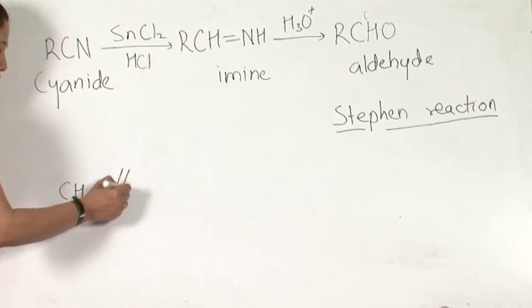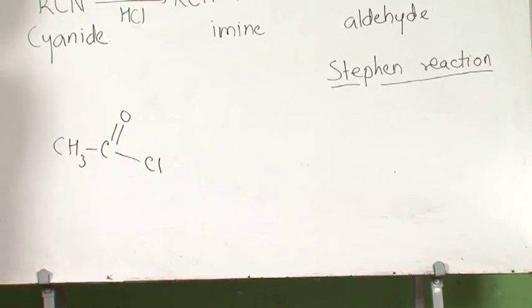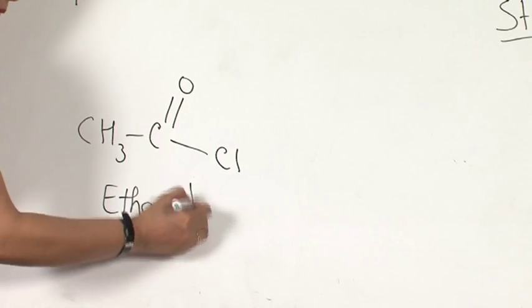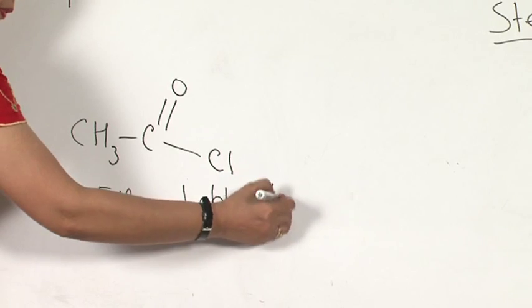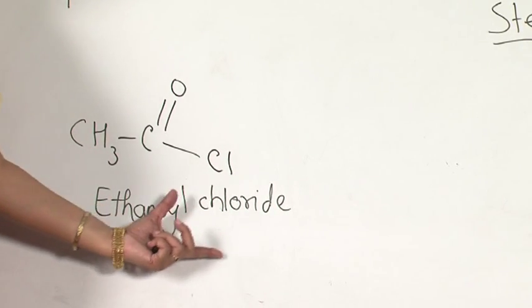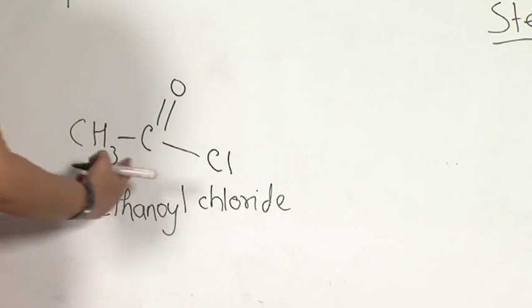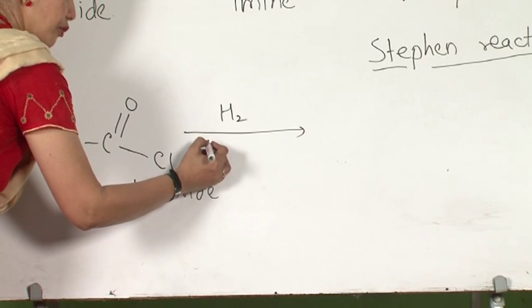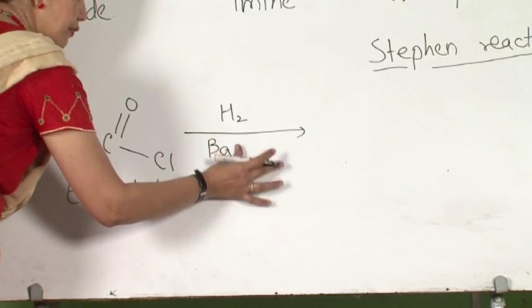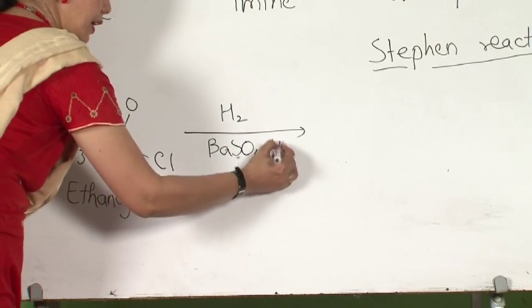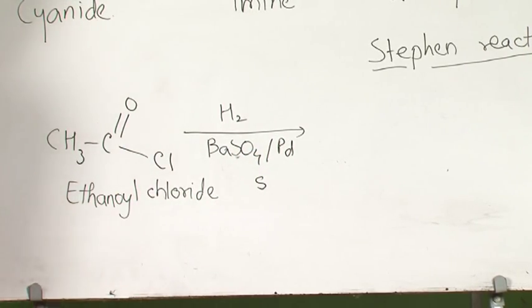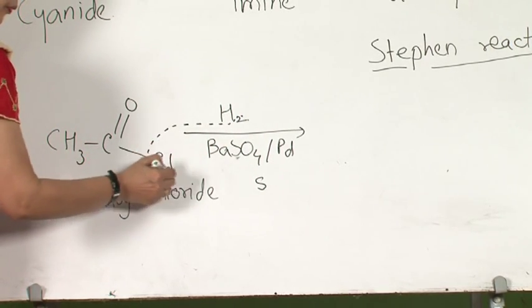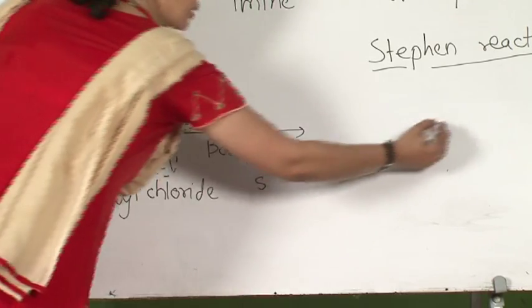I am drawing here a structure — try to identify which functional group I have written here. I am giving the name also. I hope with the help of the name you would have identified: this is acid chloride. When an acid chloride reacts with H₂ in the presence of barium sulphate, palladium, and a small amount of sulphur, what happens? This H and this Cl come out as HCl, the byproduct.